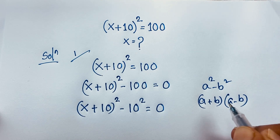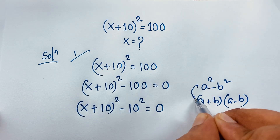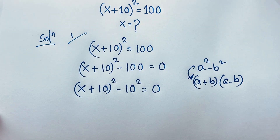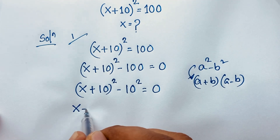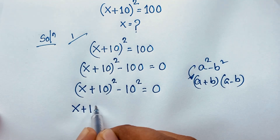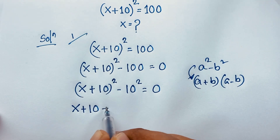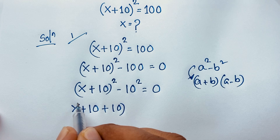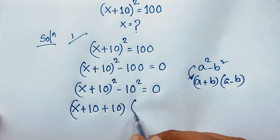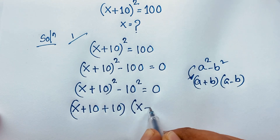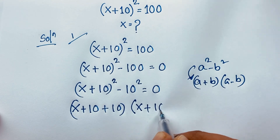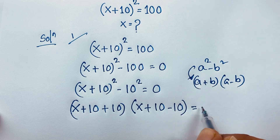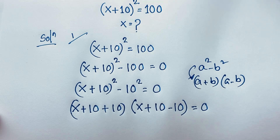If I apply this math formula here, you can see that it will be (x + 10 + b), where b = 10, then (x + 10) and here b = −10, equal to 0.